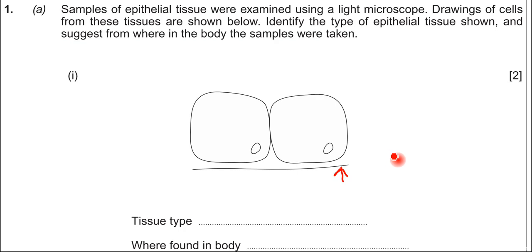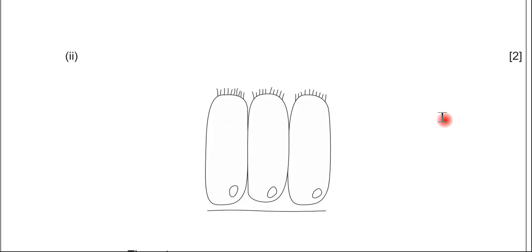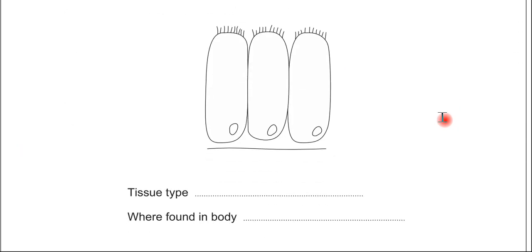So cuboidal epithelium, a good example of where these are found are in the kidney, where they actually form part of the kidney tubules. So that's the cuboidal tissue. If we move on to part two, this is a slightly different shaped cell within this tissue.